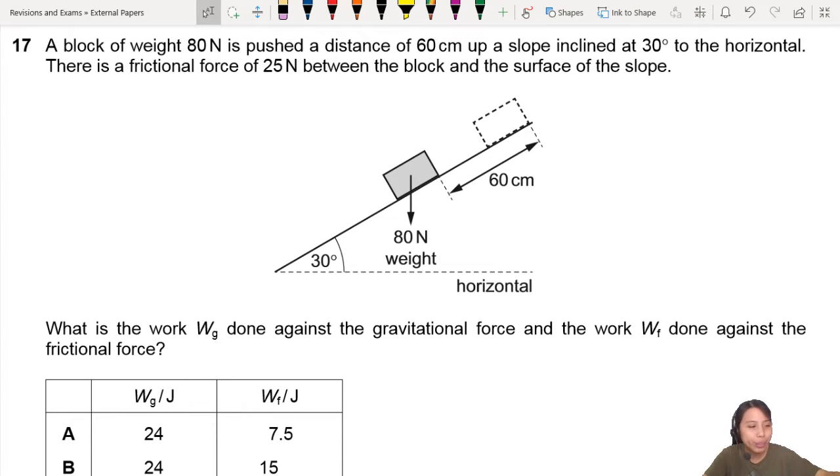We have another inclined plane, two inclined planes in this question. A block of weight 80 newton pushed a distance up the slope. So you are pushing up the slope at an angle. There's a frictional force and there's weight. What is the work done against gravitational force and the work done against the frictional force?